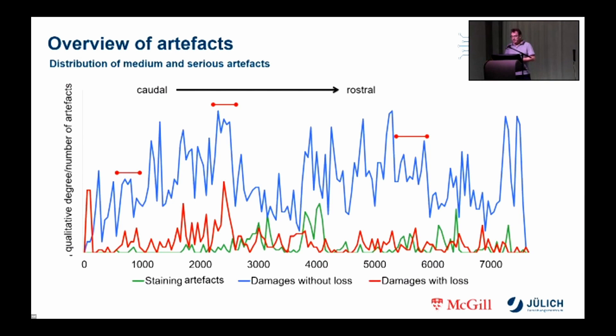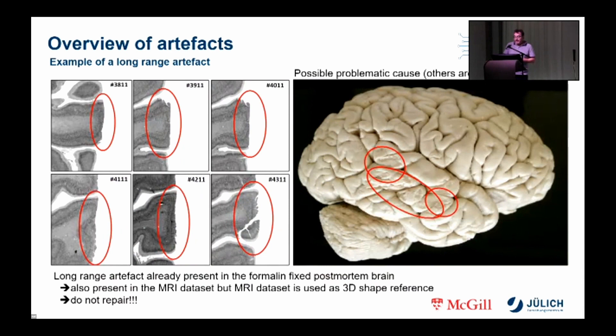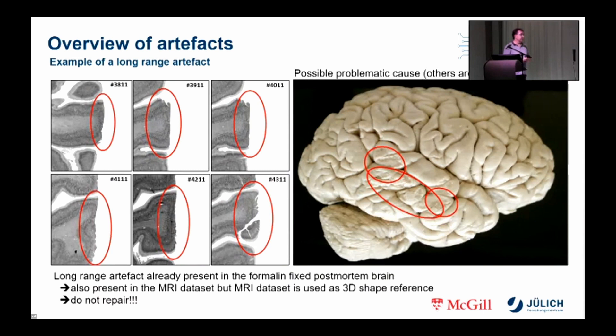Not all artifacts need to be repaired. For example, some artifacts were created by removing the brain from the skull — as seen in the photo taken before the MRI scan, these artifacts were already present and are therefore also in the MR dataset. Since this MR dataset is used as a shape reference for the 3D reconstruction, artifacts that were already present before the MR acquisition must not be repaired.